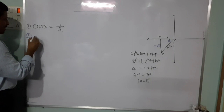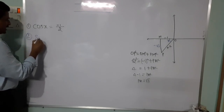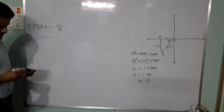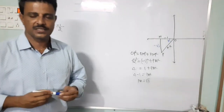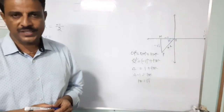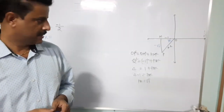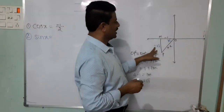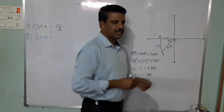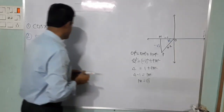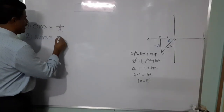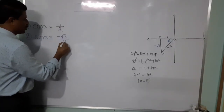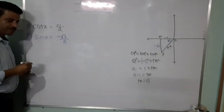For cos x, next find sin x. We know sin x is defined as opposite by hypotenuse. The opposite side is minus root 3 and the hypotenuse is 2. Therefore sin x equals minus root 3 divided by 2.